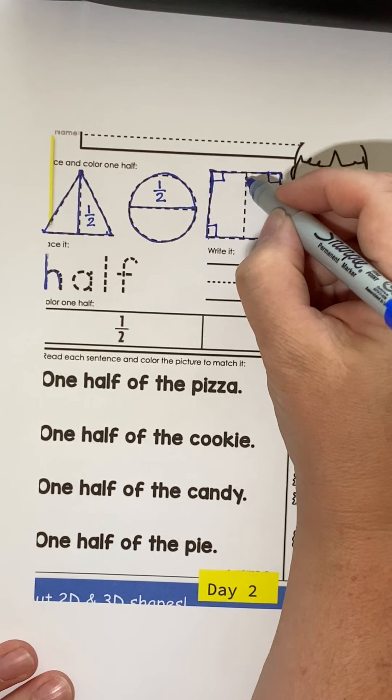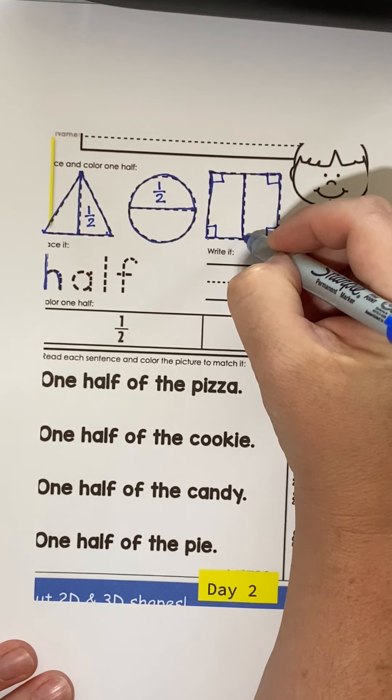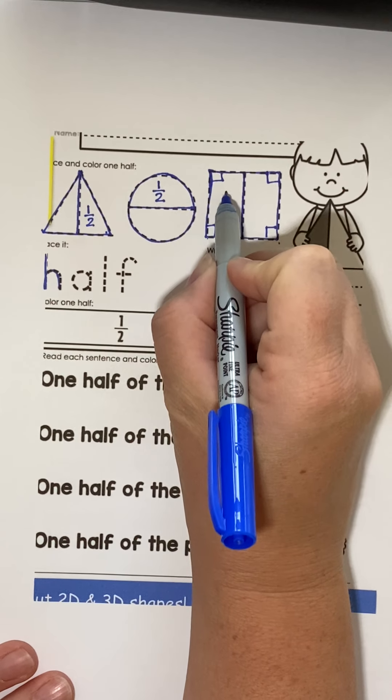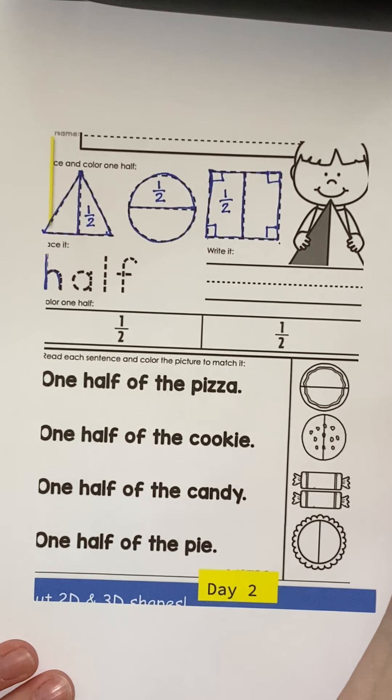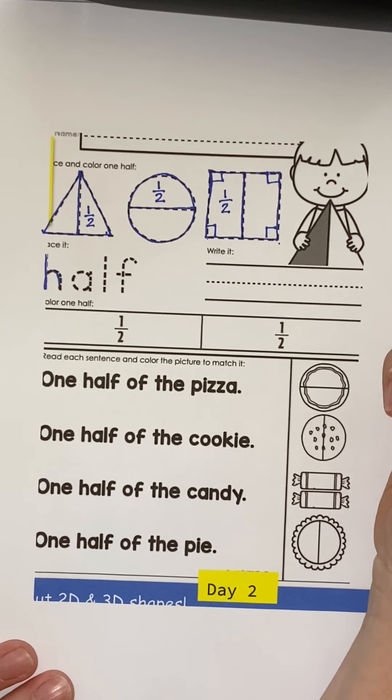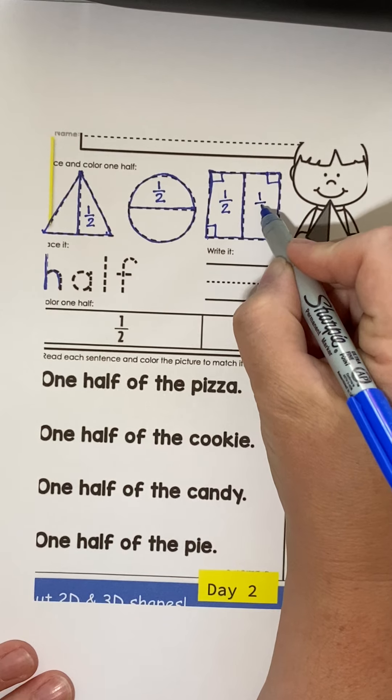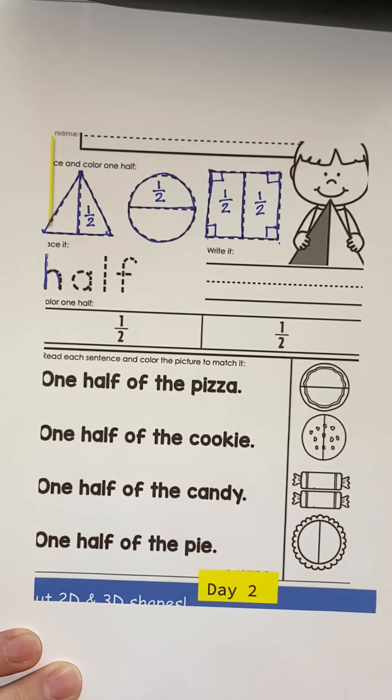If I divide my square in half, it would look like this. One over two. One half. Remember, we do not say one tooth. We say one half. One over two. One half.